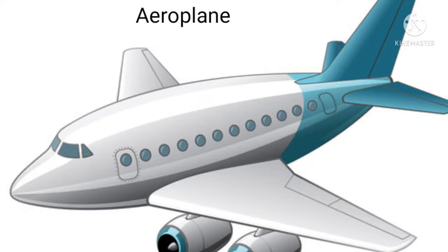This is an aeroplane. An aeroplane has two fixed wings and can fly high up in the sky like a bird, with the help of its engine and wings. An aeroplane is the fastest mode of transport — it can carry many people and travel long distances over a short period of time.